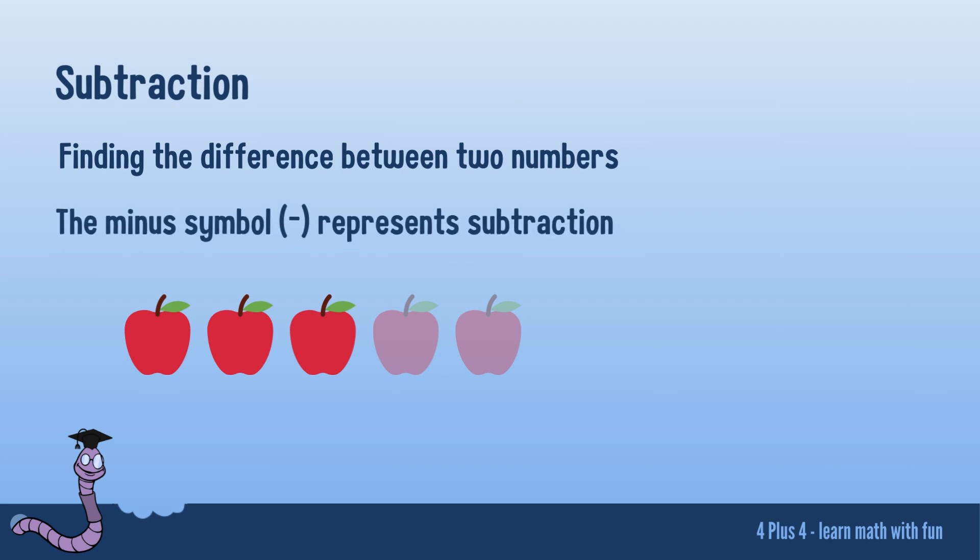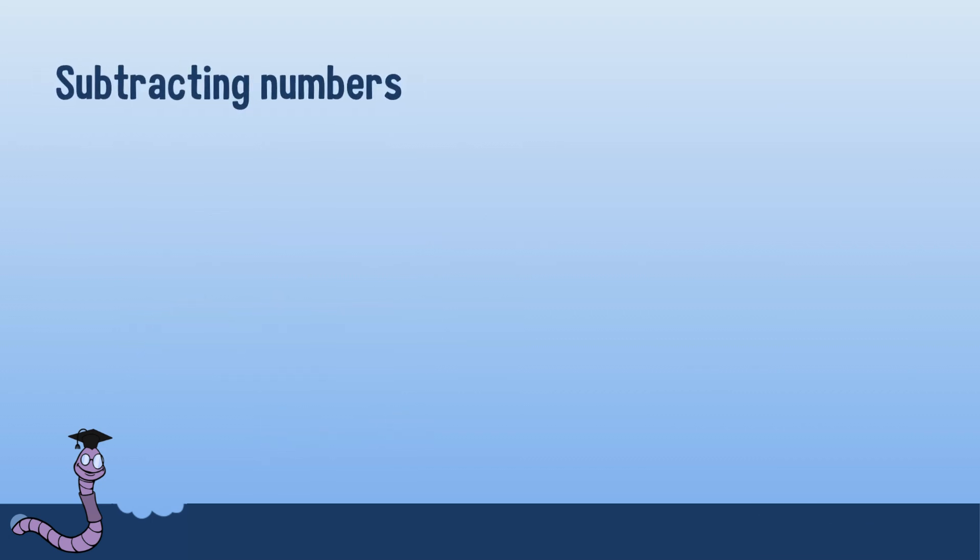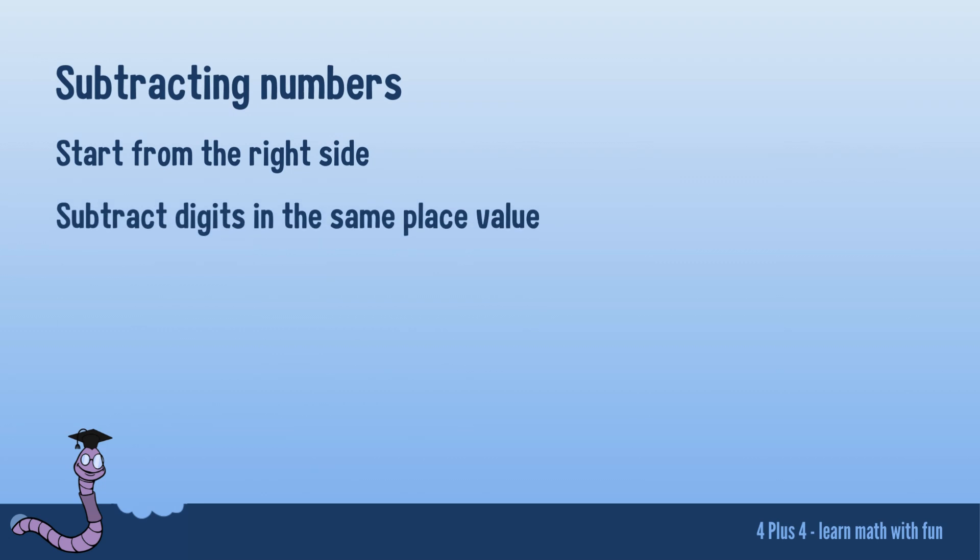Subtraction is denoted by the minus symbol, the mathematical way of saying take away. In our apple example, you would write 5 minus 2. Here are some quick tips for subtracting numbers efficiently: start from the right side, subtract digits in the same place value, and borrow one if the upper digit is smaller.